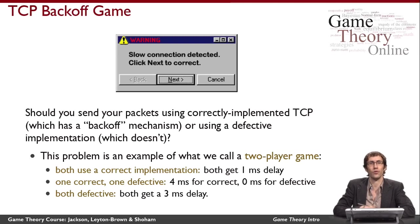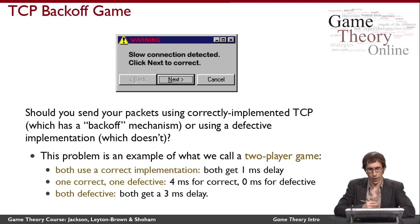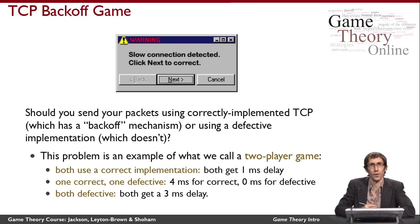A game, in general, is any interaction between two or more people where the outcomes of the interaction depend on what everybody does and everybody has different levels of happiness for the different outcomes. So let's think about a two-player version of this interaction, which a game theorist would call a two-player game. You might worry that the internet has a lot more than two people using it, but this example scales very naturally to larger numbers of players and everything interesting about it would remain true.